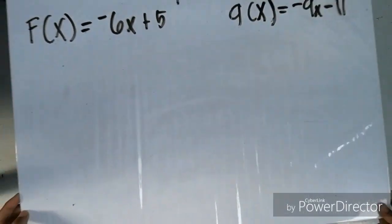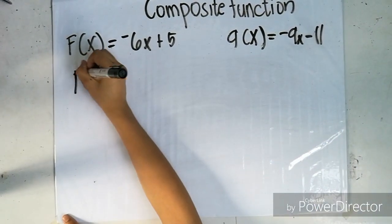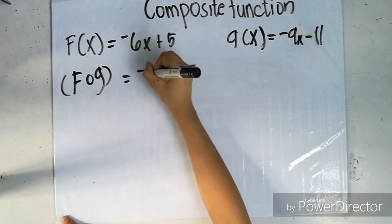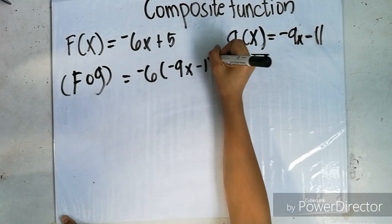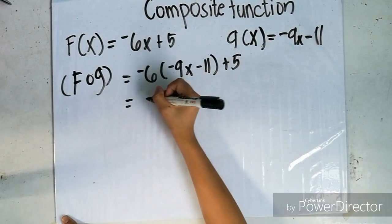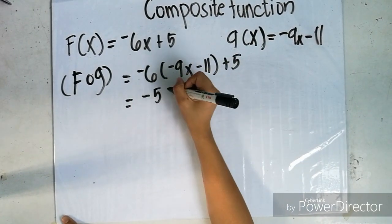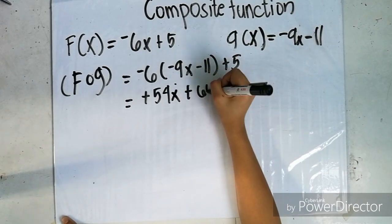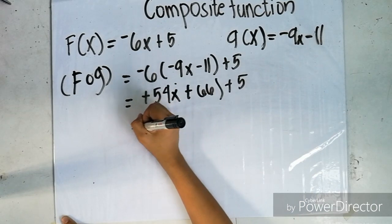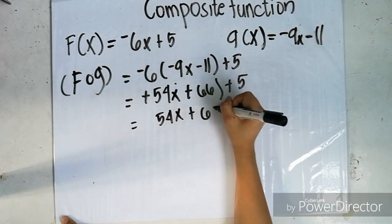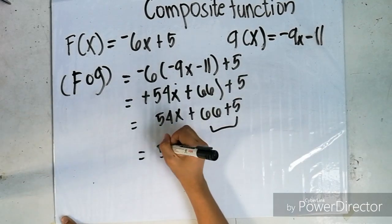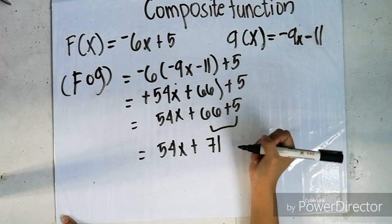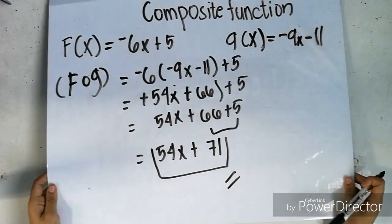Let's start with f of g. Write f of g equals negative 6, then substitute x with g(x), which is negative 9x minus 11, then copy plus 5. Negative 6 times negative 9 equals positive 54x, and negative 6 times negative 11 equals positive 66, plus 5. Combining like terms: 54x plus 71. So f of g equals 54x plus 71.